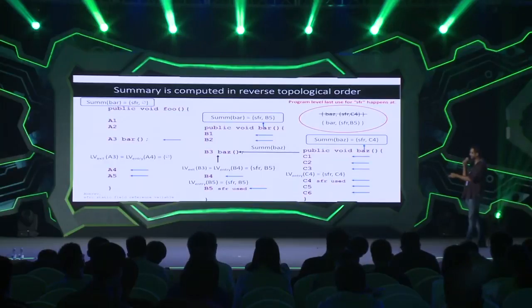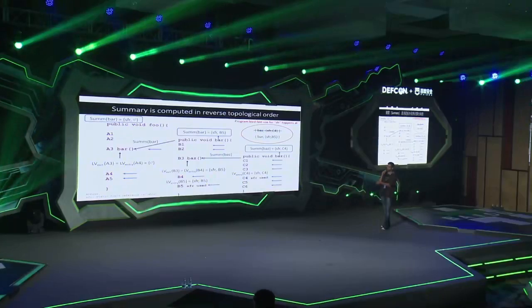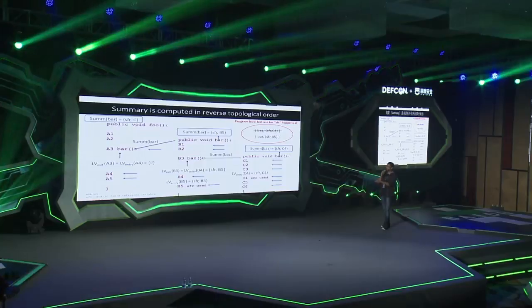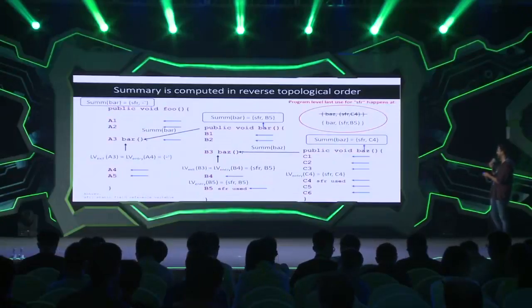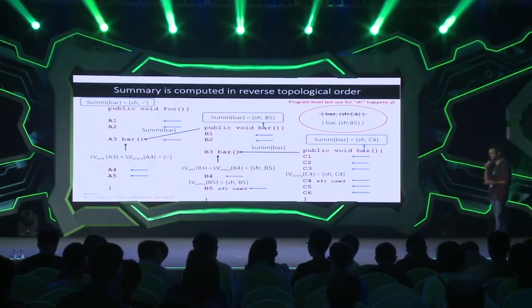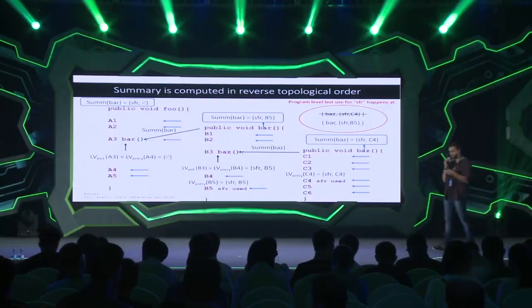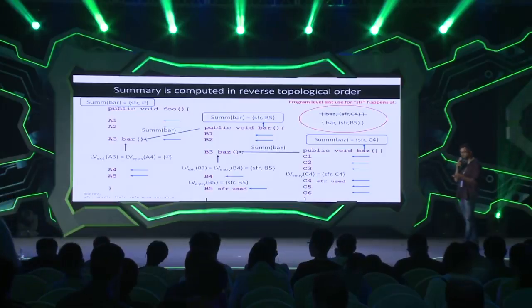When we reach the bar method invocation in foo, we pull in bar's summary. But LvExit of A3 is phi, because SFR is not used further inside foo. So the value is not overwritten. Analysis completes and the result tells us SFR was last used at B5 inside bar. Algorithmically, this is how Androsia runs on your code and figures out the last usage point of any object in the application.